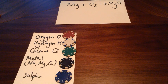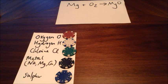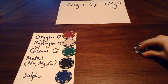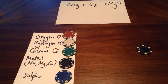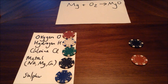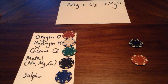We're going to start off with our first equation, which is quite an easy one. We're going to limber up with magnesium plus oxygen going to magnesium oxide. So we are going to need some black chips and some red chips because we've got magnesium and oxygen. What do those numbers mean up there? So Mg just means magnesium — it means one magnesium atom.